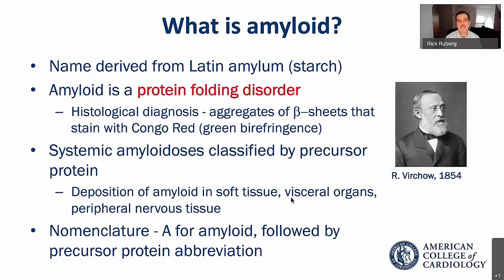Amyloidosis is the deposition of amyloid protein in the body. Systemic amyloidoses are classified by the protein that misfolds. Amyloidosis deposits all over the body in the soft tissue, visceral organs, and peripheral nervous tissue, causing disease and dysfunction of those organs. The nomenclature is actually quite straightforward.